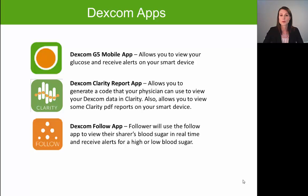The Dexcom G5 mobile app is the main app that works in conjunction with the Dexcom G5 system. It allows you to view your glucose and receive alerts on a smart device. If you're at all familiar with the Dexcom receiver, it essentially provides you with all the same functionality and features that a receiver would, but on your smart device. The Dexcom Clarity Report app interfaces with your Clarity account and allows you to view some of the graphs and charts that Clarity has to offer on your phone.